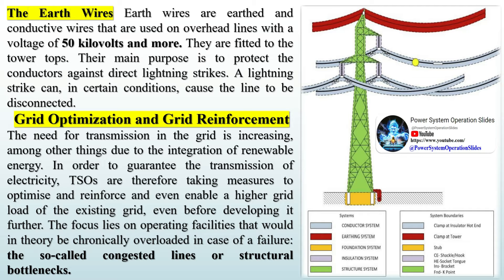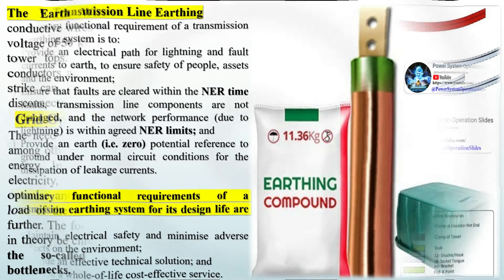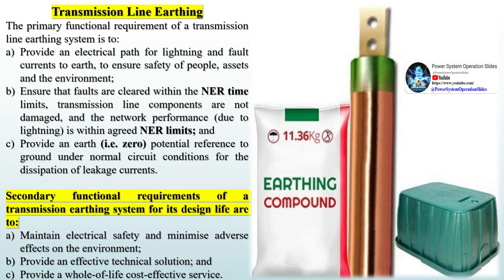The need for transmission in the grid is increasing, among other things due to the integration of renewable energy. The focus lies on operating facilities that would in theory be chronically overloaded in case of a failure — the so-called congested lines or structural bottlenecks. The primary functional requirement of a transmission line earthing system is to provide an electrical path for lightning and fault currents to earth, to ensure safety of people, assets, and the environment, and to ensure that faults are cleared within the NER time limits.